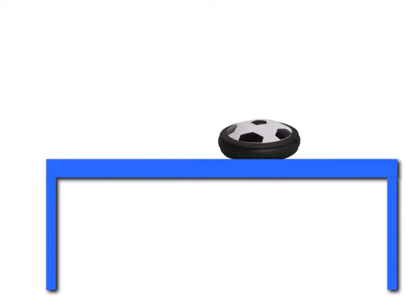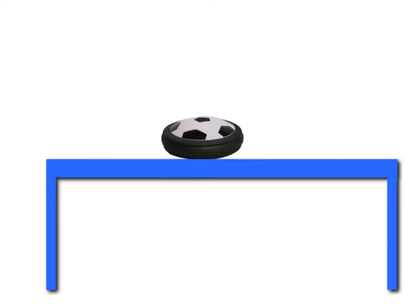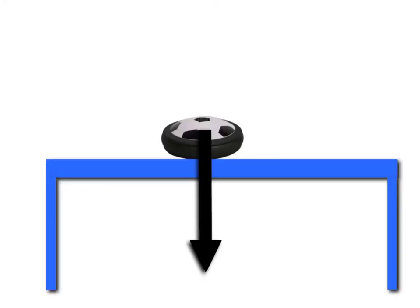We've been playing around in class with something called an air puck, which when you turn the fan on just glides along the table. But what would the force diagram look like if I just left the air puck sitting on the table? Well, gravity is certainly acting on the air puck — gravity is making the air puck sit on the table instead of floating away. So I would draw a vector representing gravity, F-gravity. But then I need to ask myself: is that the only force acting on the air puck? Well, is the air puck falling? No, it's not. The air puck is sitting on the table. So does that mean the table is actually exerting a force on the air puck?